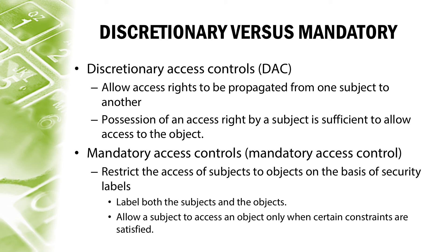Now let's take a quick look at contrasting discretionary access control and mandatory access control. In previous lectures, we discussed discretionary access control. According to the trusted computer system evaluation criteria, the United States Department of Defense: in computer security, discretionary access control is a type of access control defined as a means of restricting access to objects based on the identity of subjects and/or groups to which they belong. Mandatory access control, on the other hand, refers to a type of access control by which the operating system restricts the access of subjects to objects on the basis of security labels. This method only allows a subject to access an object when certain constraints are satisfied.